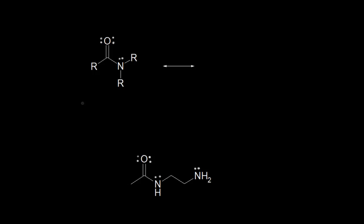Let's look at the amide functional group and assign a steric number to this nitrogen. The steric number equals the number of sigma bonds — here's a sigma bond, here's a sigma bond, and here's a sigma bond — so three sigma bonds, plus the number of lone pairs of electrons. There's one lone pair of electrons on that nitrogen, so three plus one gives us a total of four for the steric number.